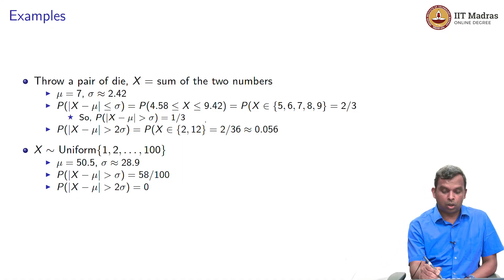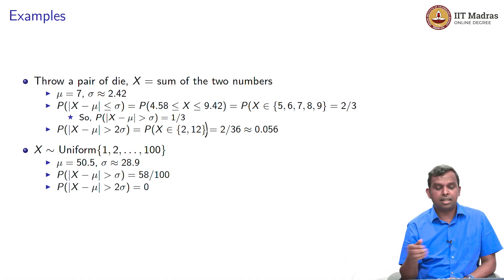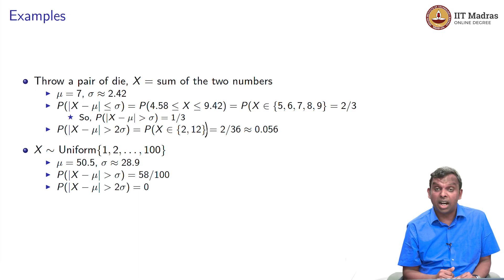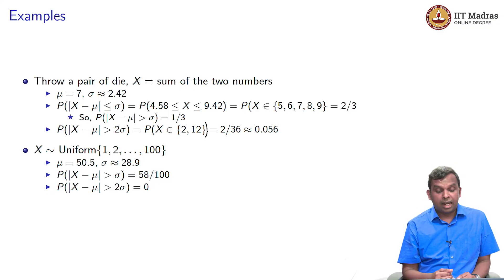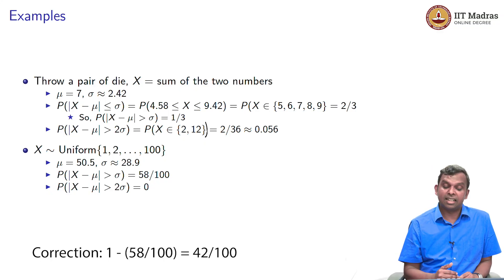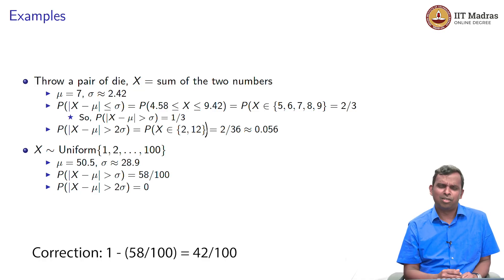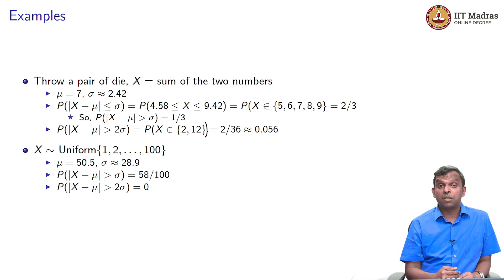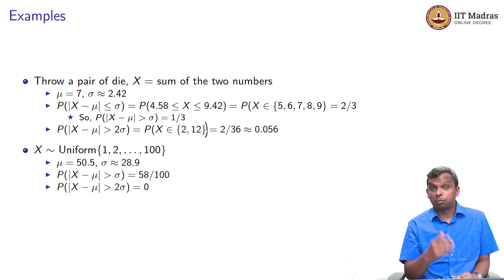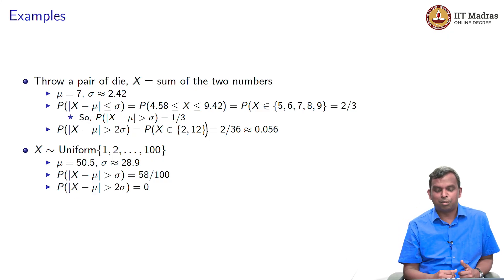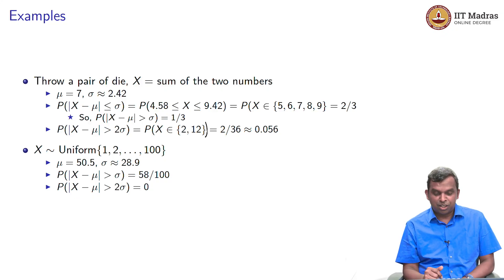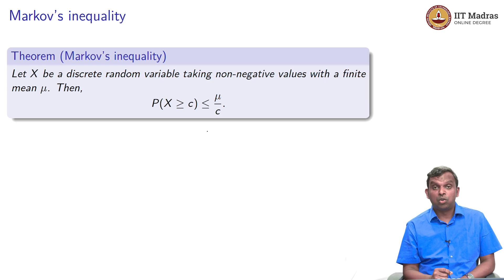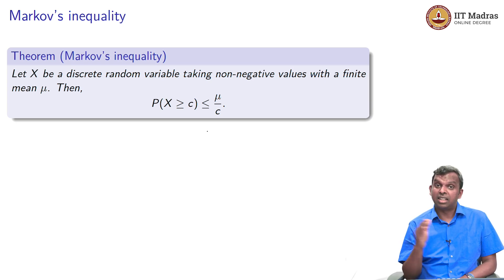Let's look at one more case: X being uniform from 1 to 100. The mean is 50.5 and the standard deviation is about 28.9. The probability that |X minus mu| is greater than sigma is 58/100, about 0.58. But the probability that |X minus mu| is greater than 2 sigma is actually 0. You see how this probability drops. Hopefully this example has convinced you, and we will also see precise bounds — upper bounds on how likely it is that the random variable deviates from its mean.